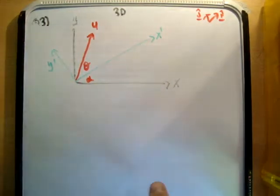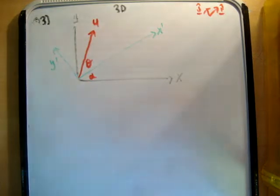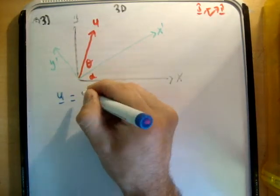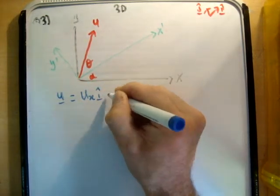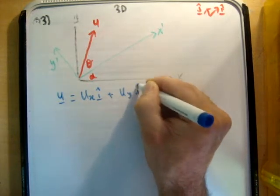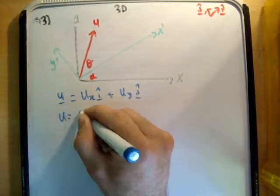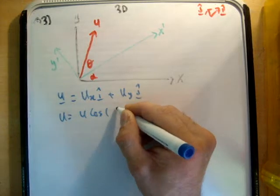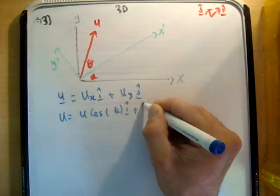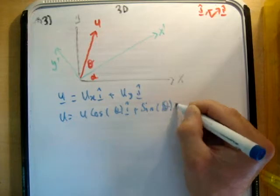And also have my unit vectors in the corner, drawn very poorly. So we know of course that u is equal to u_x i hat plus u_y j hat. And u is equal to u times the cos of theta i plus the sine of theta j.